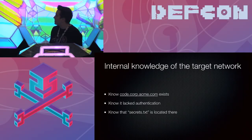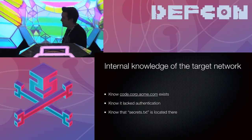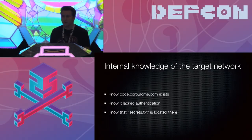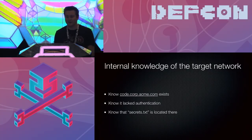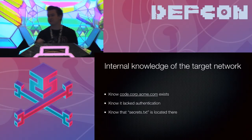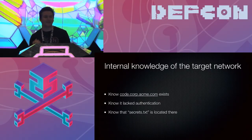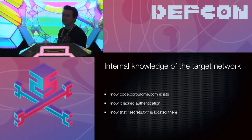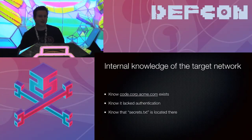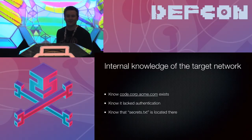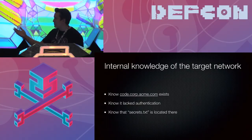We also needed internal knowledge of the target network — we had to know code.corp.acme.com existed. I wasn't joking when I said your network engineer probably put the entire diagram on his resume — I've seen that before. People leak host names all over the place: GitHub issues where your developer posts and accidentally includes host names in the debug log — people are scraping those all the time. Doesn't matter if you had it up for 60 seconds; someone pulled it down and we have that host name. Plus, these host names are built for people — they're very predictable: code.corp.acme.com, git.corp.acme.com.